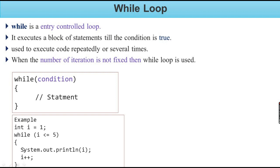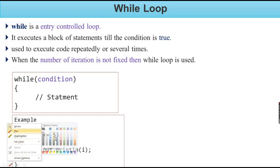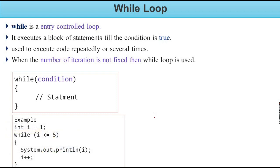Since it is true, the body of the while loop — the statements — will execute. So `System.out.println` will print the value of `i`. Then `i` is incremented. The statement is executed and printed. Then `i` is incremented again and `i` becomes 2.